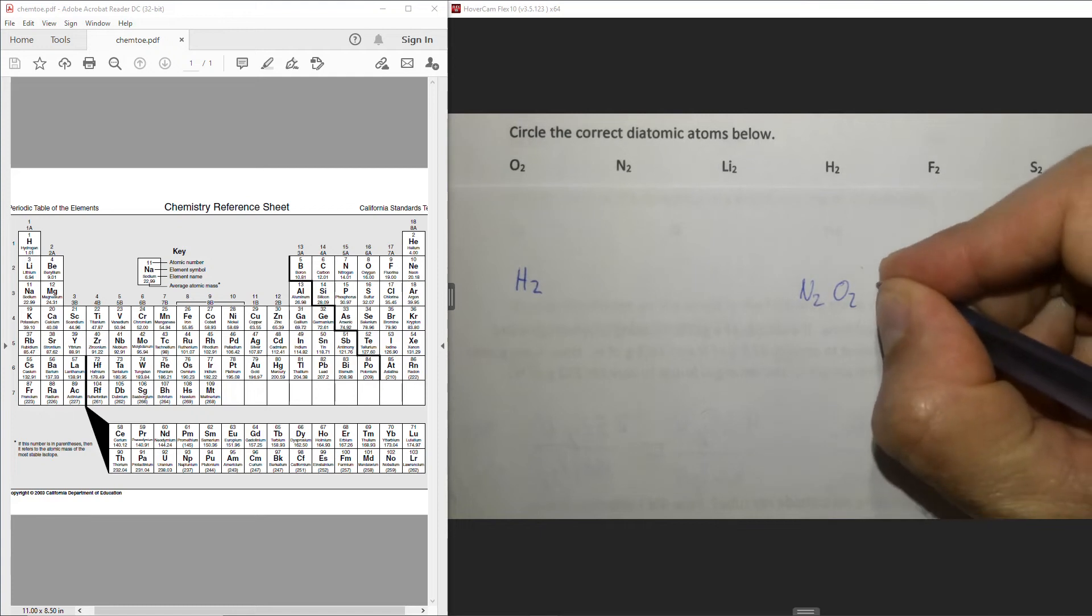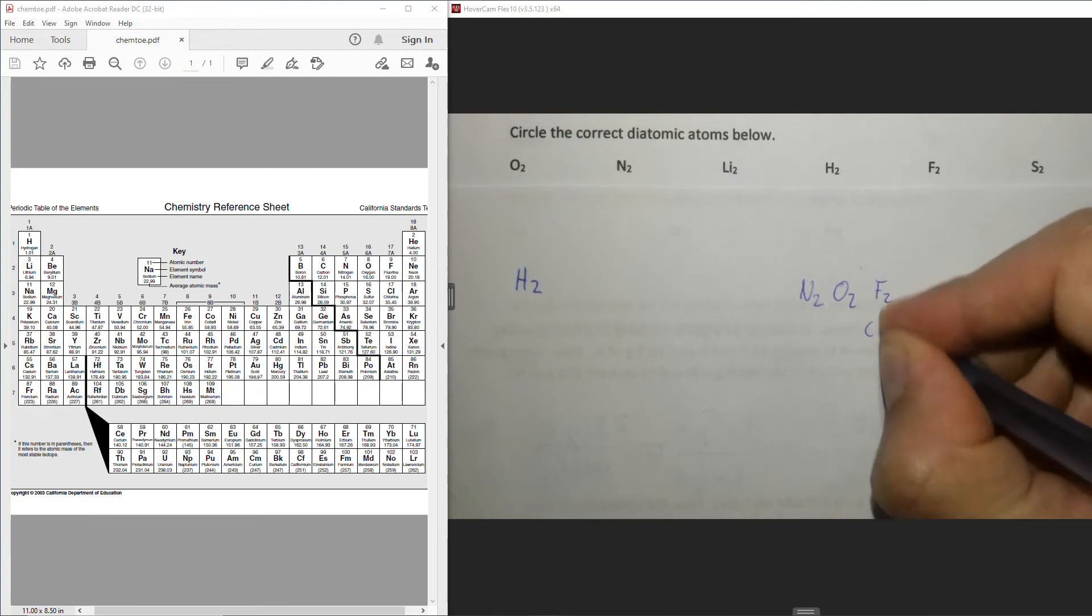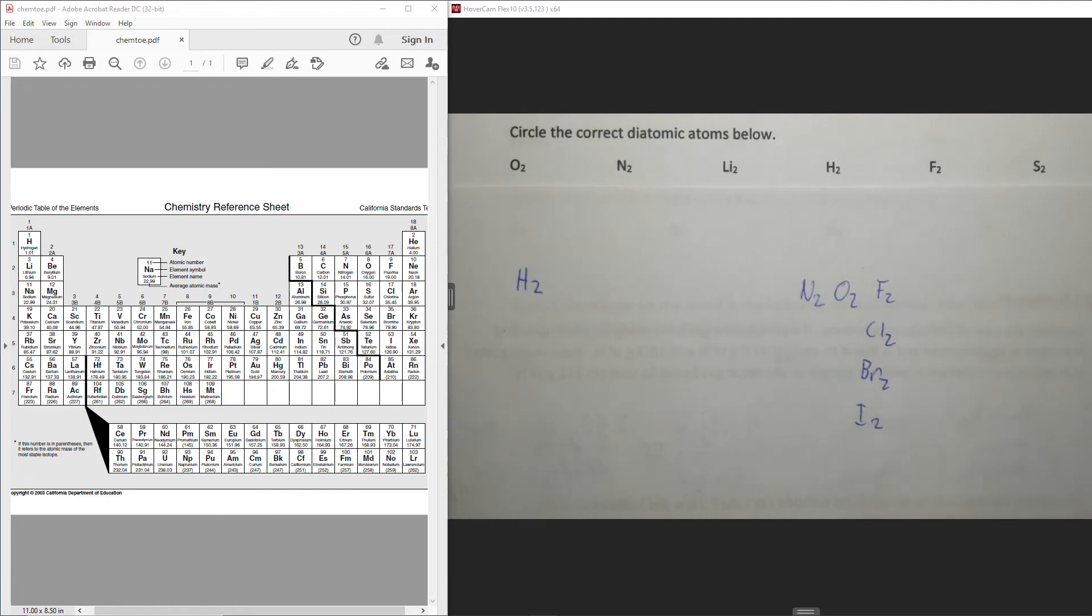oxygen, and then the halogens: fluorine, chlorine, bromine, and iodine. And you might ask yourself why am I writing them